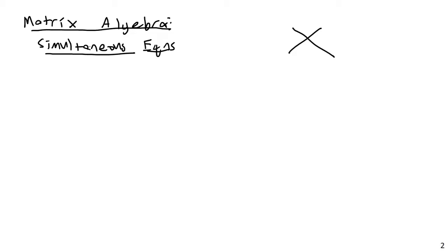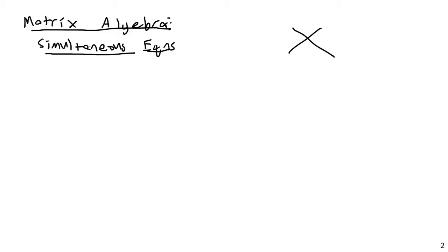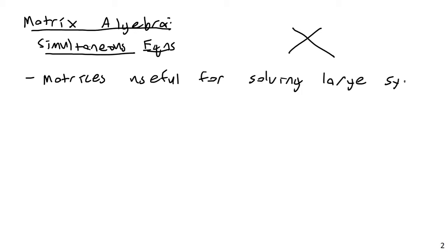So how does this apply to solving a truss? Matrices are very useful for solving large systems of equations. If you have a truss where all member forces are unknown, all reactions are unknown, and each joint provides two equilibrium equations, what you have fundamentally is a matrix system.